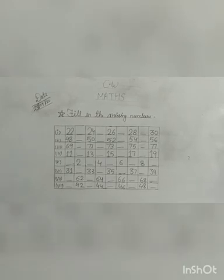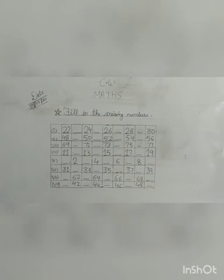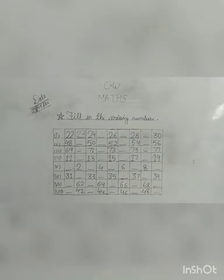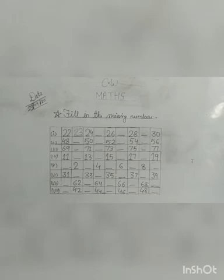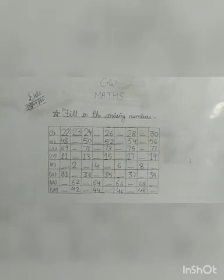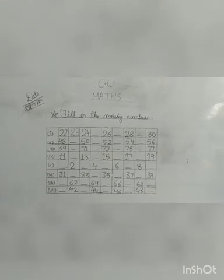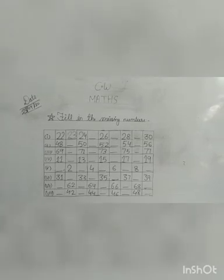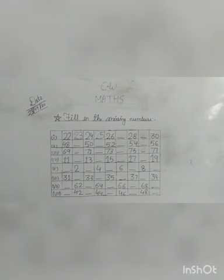So the first number line starts at 22. After 22, what we will write? Yes, 23. So write 23. Now 22, 23, 24. After 24, yes, 25. Write 25 here.